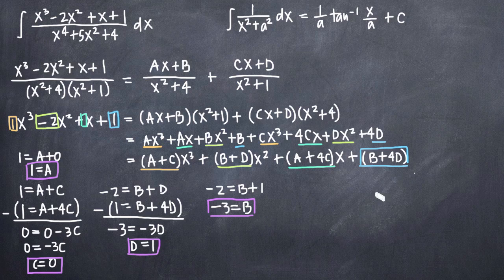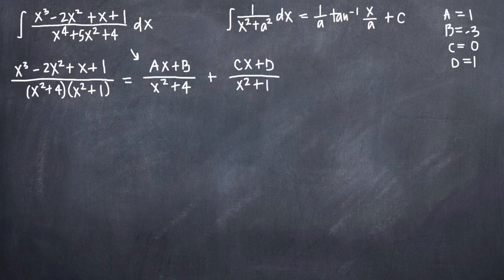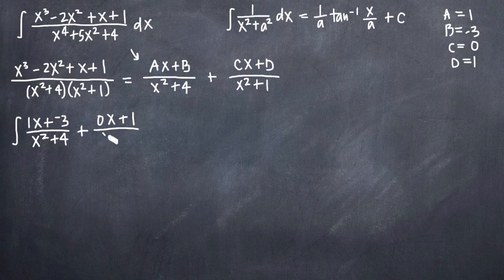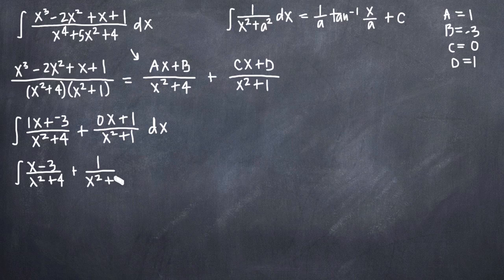Now that I have all four constants — A equals 1, B equals negative 3, C equals 0, D equals 1 — I can plug them back into the partial fractions decomposition and then integrate. So I'll have the integral of: Ax plus B over x squared plus 4, which is 1x plus negative 3 over x squared plus 4; plus Cx plus D over x squared plus 1, which is 0x plus 1 over x squared plus 1, all dx. Simplified, this is the integral of x minus 3 over x squared plus 4 plus 1 over x squared plus 1, dx.